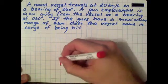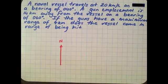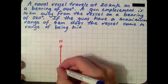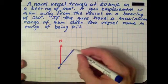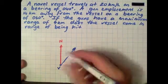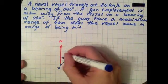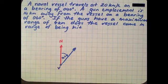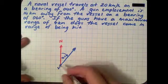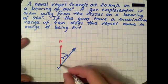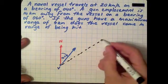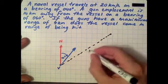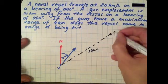Let's start to look at a diagram for this question. There's our north line - we need that so we can look at our bearing. Here's our vessel. From our vessel, it's traveling on a bearing of 40 degrees. That's the direction the vessel is traveling. We've also got that gun placement 14 kilometers away on a bearing of 60 degrees - that's slightly beyond 40. So it's probably about there. Remember, this is not to scale. About 14 kilometers, and there's our gun.